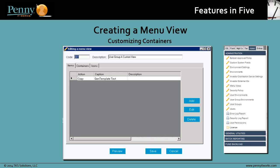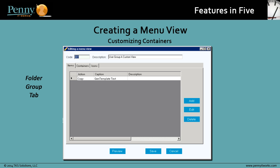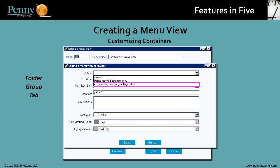Next, let's look at customizing containers on a menu view. A container is a folder, group, or tab — basically, it holds items. You can add a new container and specify its attributes, like location and text color, or you can delete an existing container from the menu view.